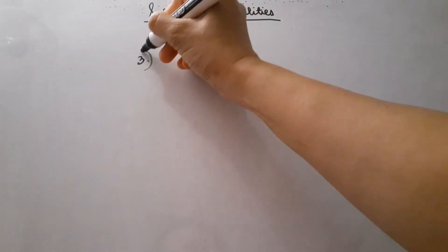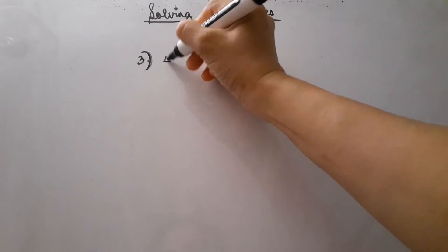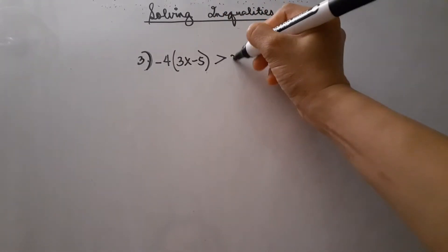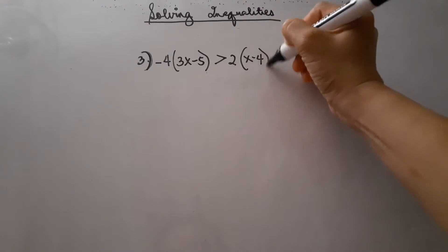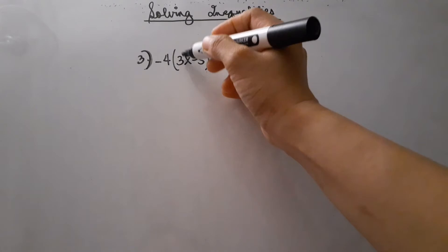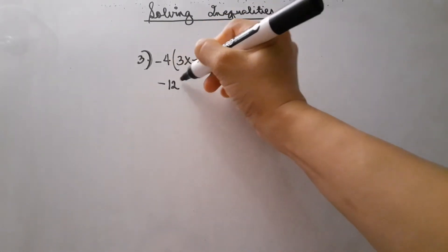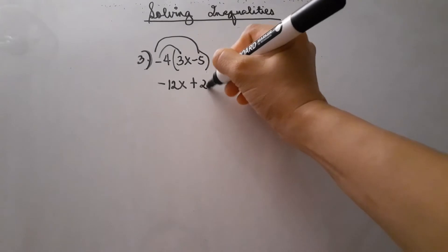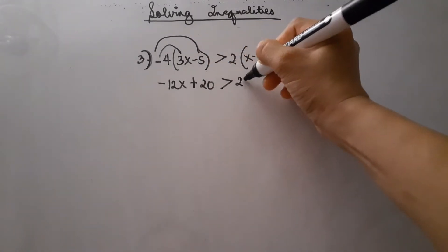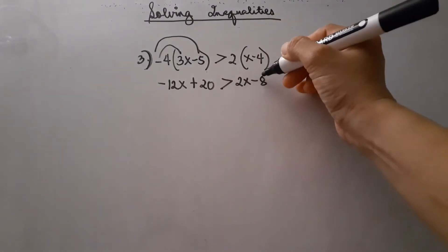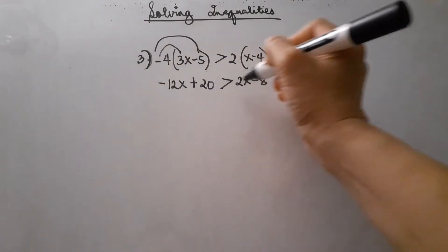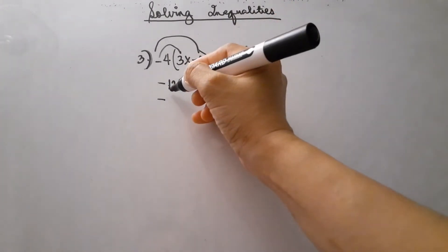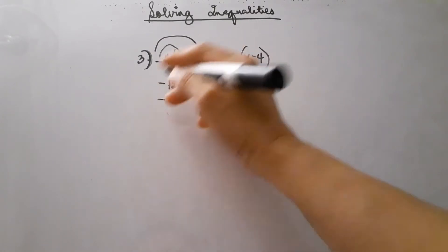Let's have example number 3, which is negative 4 times the quantity of 3x minus 5, greater than 2 times the quantity of x minus 4. First, use the distributive property: negative 4 times 3x is negative 12x, and negative 4 times negative 5 is positive 20. Then distribute the right side: 2 times x is 2x, and 2 times negative 4 is negative 8.